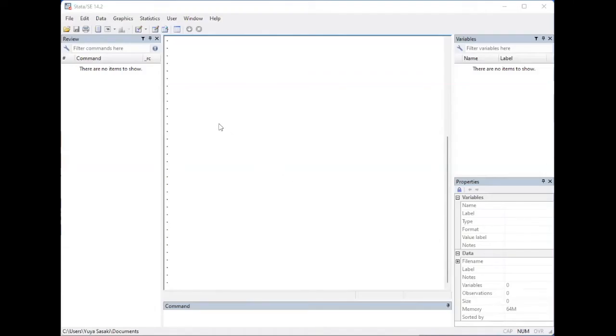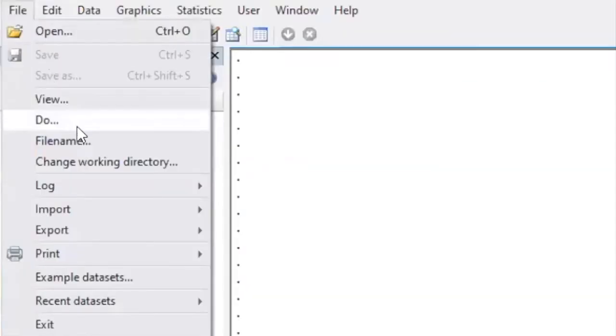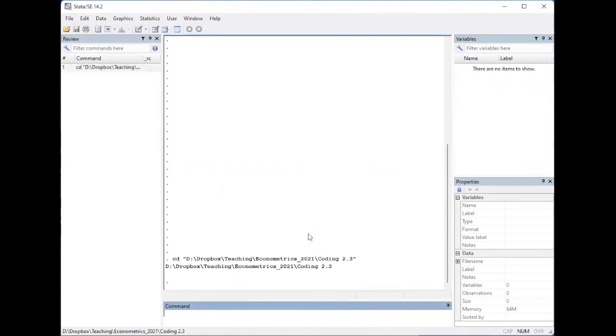In this video, I'm going to demonstrate how to construct conditional statistics using the CPS data. Set the working directory to the local folder where you have downloaded the CPS data. See the previous video for how to get the data. I'm going to put the link to the previous video from the description.